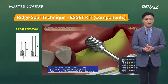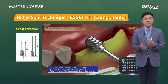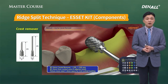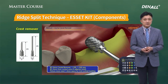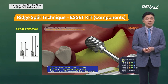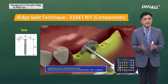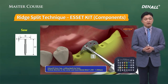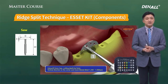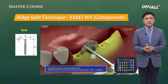Looking at each component: the crest remover removes the thin ridge at the implant placement position to widen the width buccolingually, and can be used with contra-angle or straight-angle. The saw comes in actual diameters of 7, 10, and 13 mm for different purposes — if you place a longer implant you use a longer saw, and for a shorter implant a smaller diameter saw.